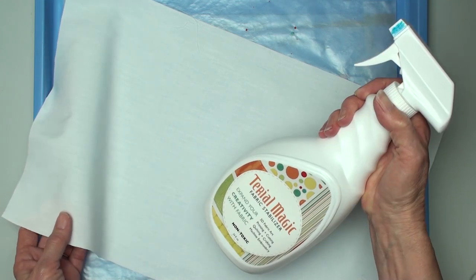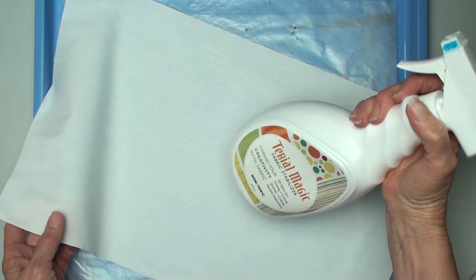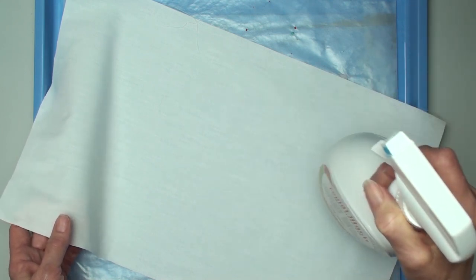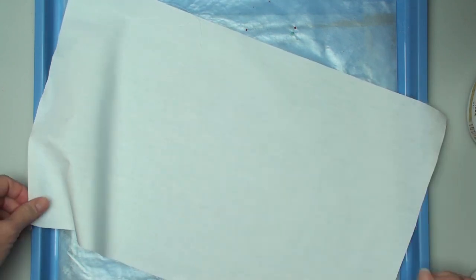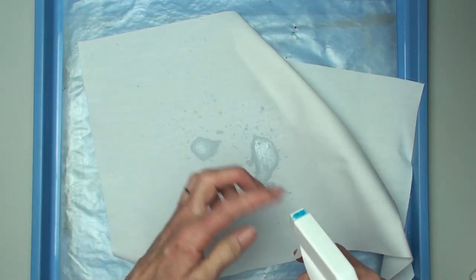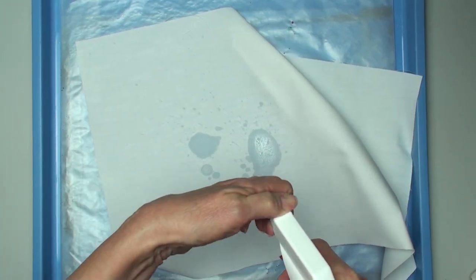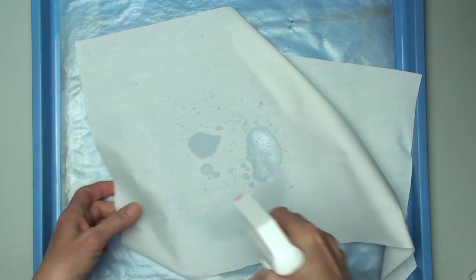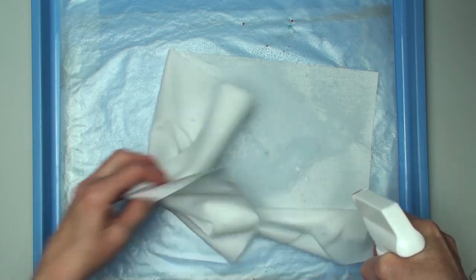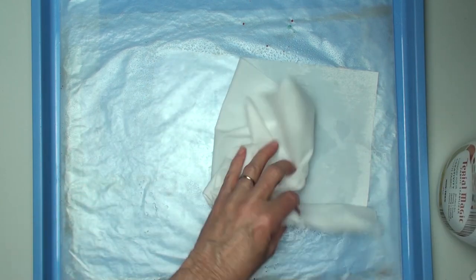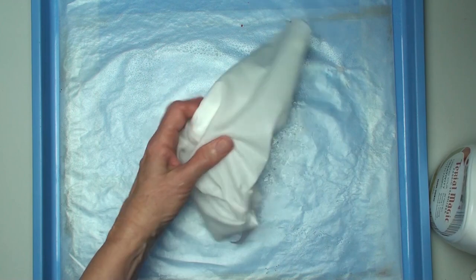I also have a product called Terial Magic. It's a spray fabric stabilizer, but I've used it in a lot of different projects, so I'm going to use it for this project. I'm going to take my fabric and really saturate it. I'm going to spray it—you want to be where you can kind of contain your spray. It's not going to hurt anything, probably.